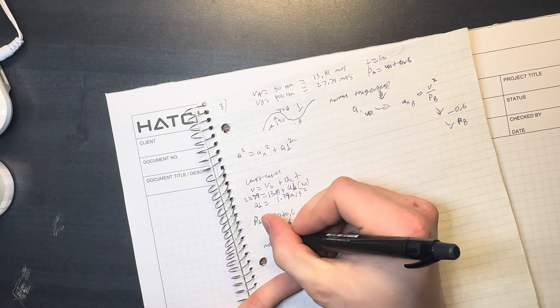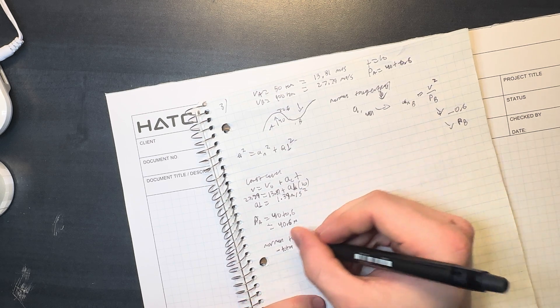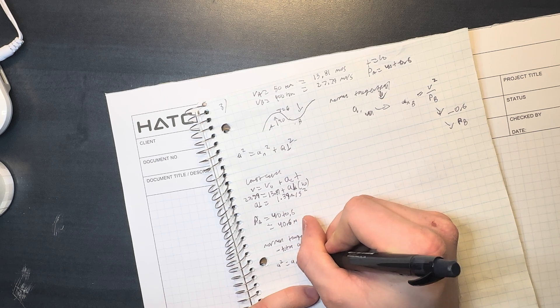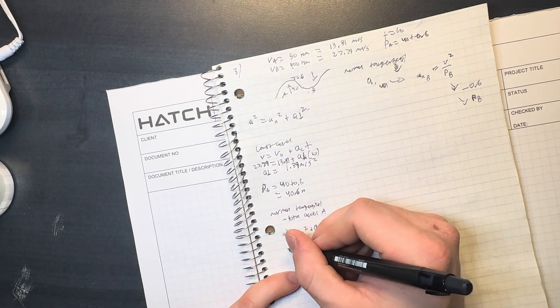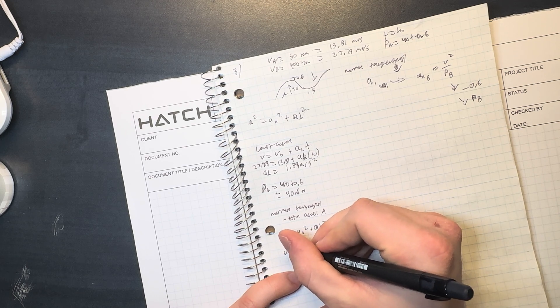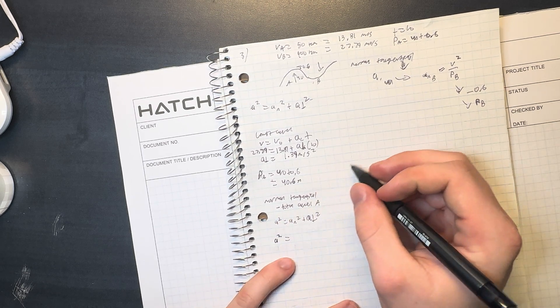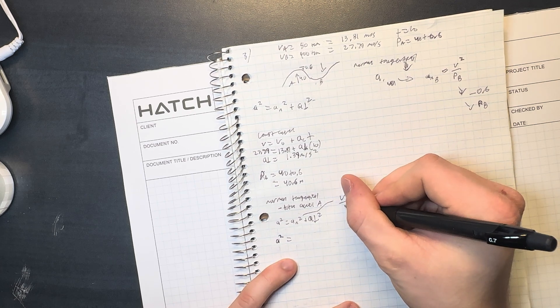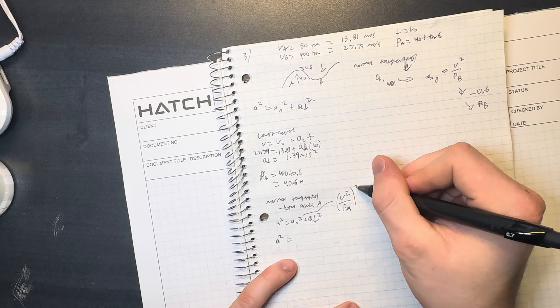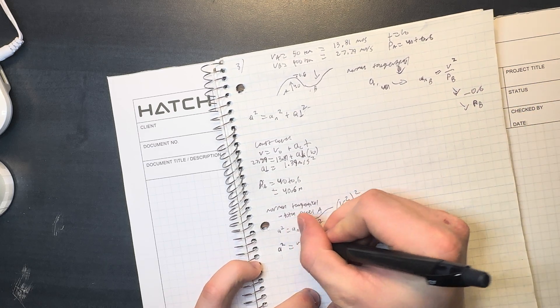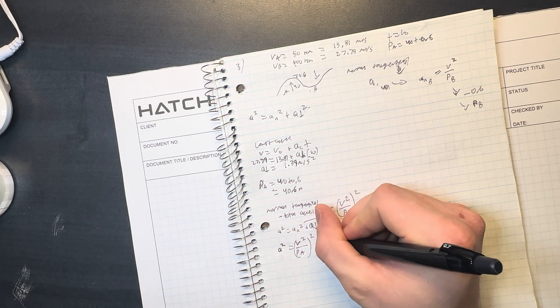Then normal tangential. So this is calculating the total acceleration of A. Okay, so a squared equals a_n squared plus a_t squared. So we know that a squared is what we're solving for. And a_n is actually v squared over radius ρ_A. And I'm just going to square all of this because the term is squared.